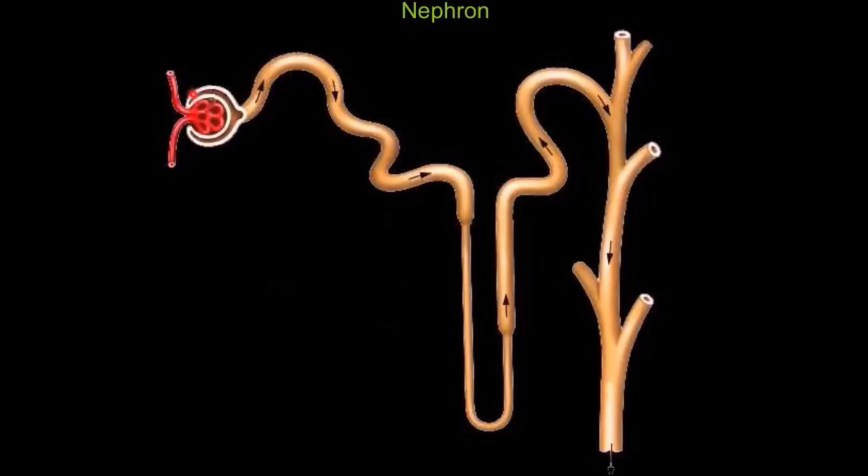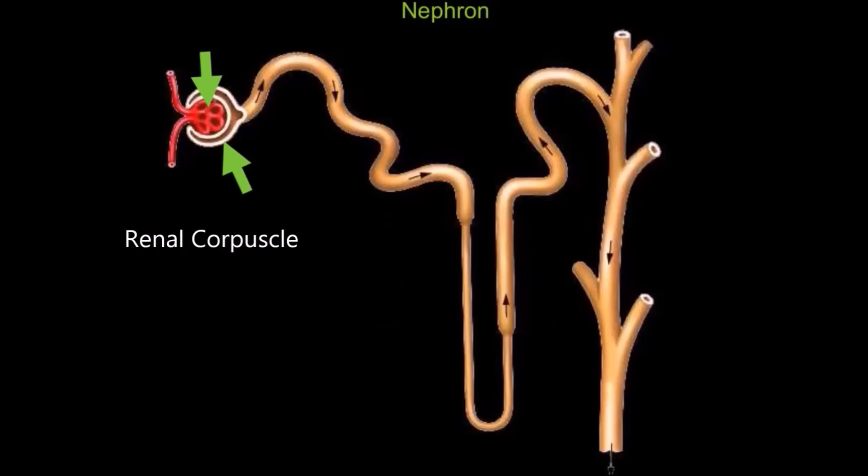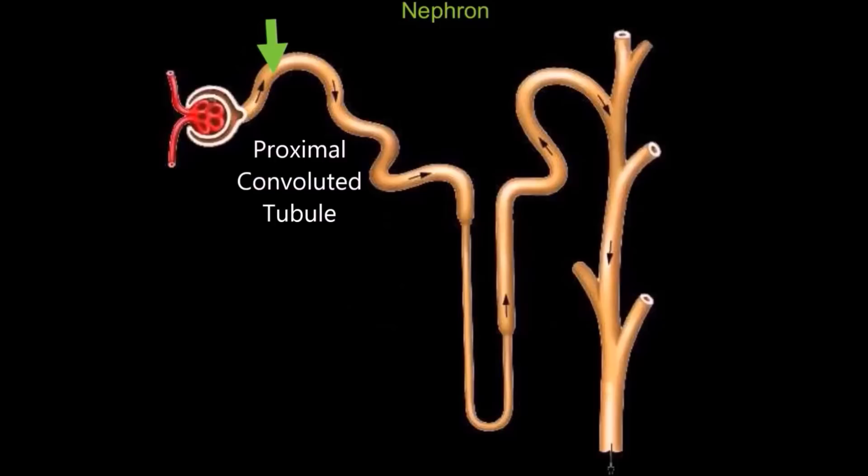The first part of the nephron is this c-shaped structure called Bowman's capsule. The glomerulus plus Bowman's capsule together form the renal corpuscle. After Bowman's capsule is the proximal convoluted tubule.